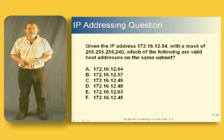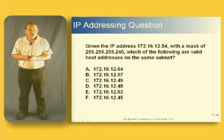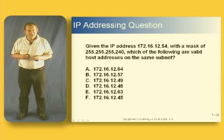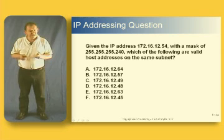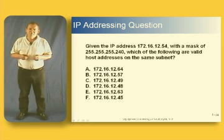Hi again. In the last section we looked at the way that computers worked out things like subnets and broadcast addresses and valid host ranges, applicable just by knowing their own IP address and their own subnet mask. What we're going to do in this section is show you a trick, because in the CCNA exam you're going to have to do essentially the same sort of thing, but much faster than before.